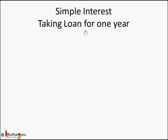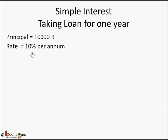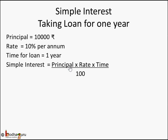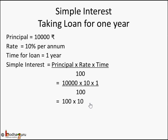Let's apply this to Sukram's loan example. Principal — the money he borrowed — is 10,000 rupees. The rate the bank charged is 10% per annum. The time for the loan is 1 year. So simple interest equals P × R × T / 100. Replacing: 10,000 × 10 × 1 / 100. The two zeros cancel, leaving 100 × 10 which is 1,000 rupees. So simple interest is 1,000 rupees.